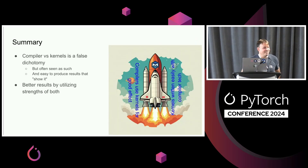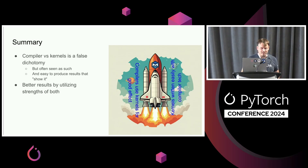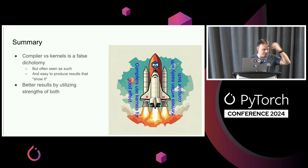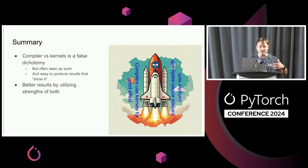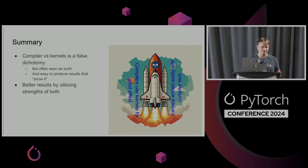As the lightning talk comes to a lightning end: compilers versus kernels is a false dichotomy. Folks often say it is, but once you dig a little bit deeper, these are two essential components to producing optimized performance for ML workloads and deployments. We actually get better results by utilizing the strengths of both and combining them together. Thank you.